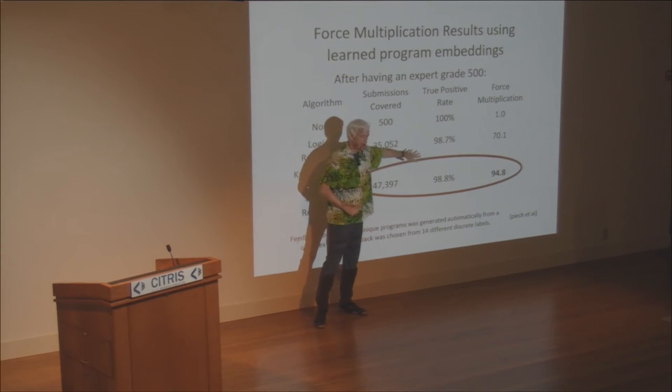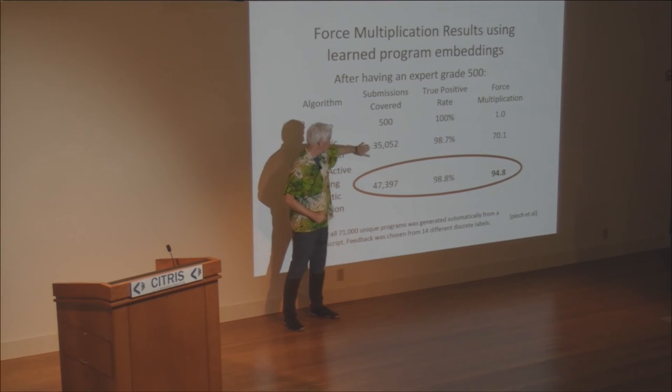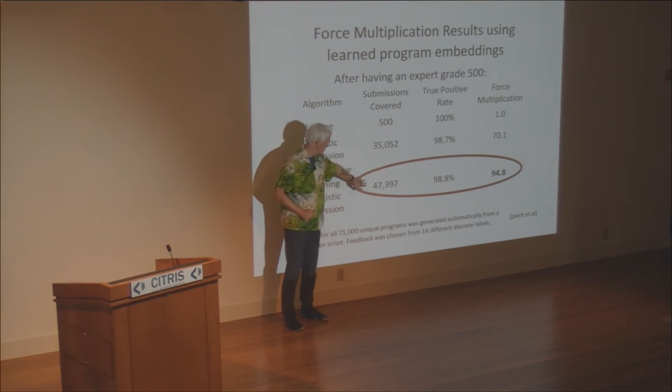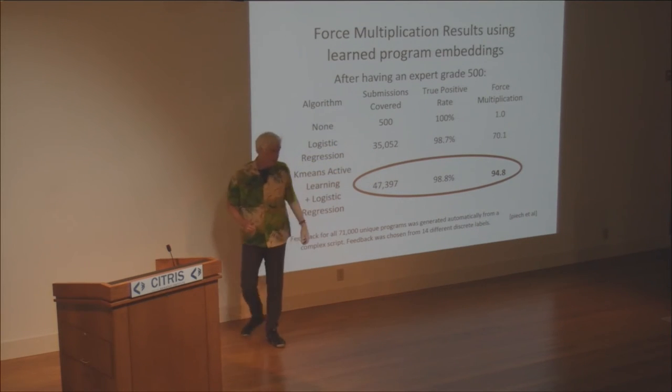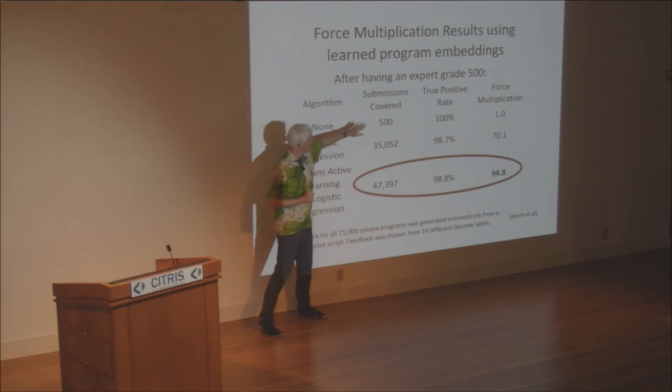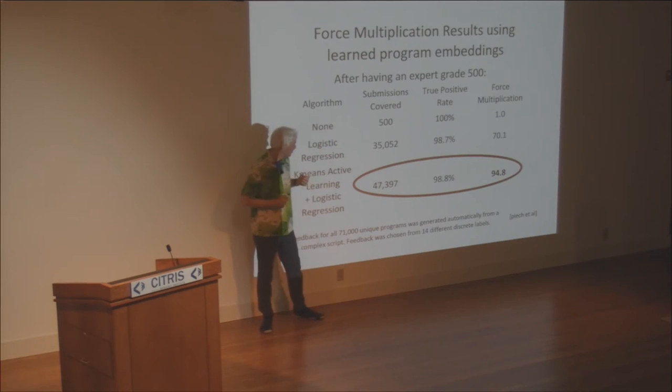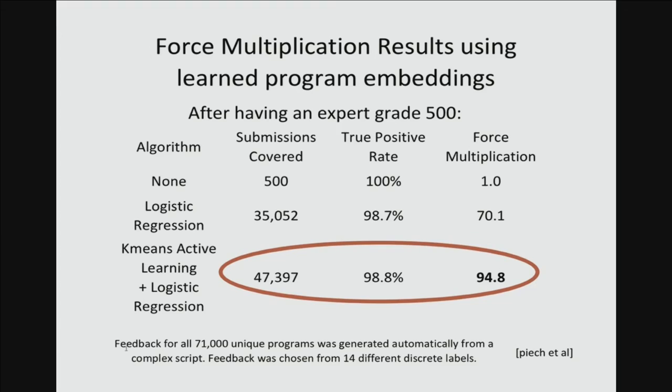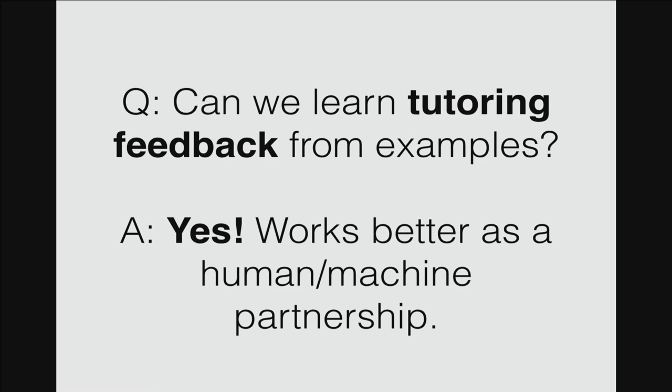It says, hey, you did this. You should have done that. The accuracy, they kept very high, 99% accuracy. And with one approach, they covered 35,000 of the submissions. With another one, they got up to 47,000 of the submissions. So, that's still not quite done yet, because there were 71,000 programs altogether. So, there's not 20,000 that were unique or hadn't been classified. But maybe if we went back and graded another 500, you'd get most of those. So, that's a force multiplier of 100. So, the TAs have to do 1 100th the amount of work now that they had to do before, because they just created a couple of programs, and then the others, most of the others, are automatically classified into that feedback. So, the answer is yes, that works. Works better as a human-machine partnership.